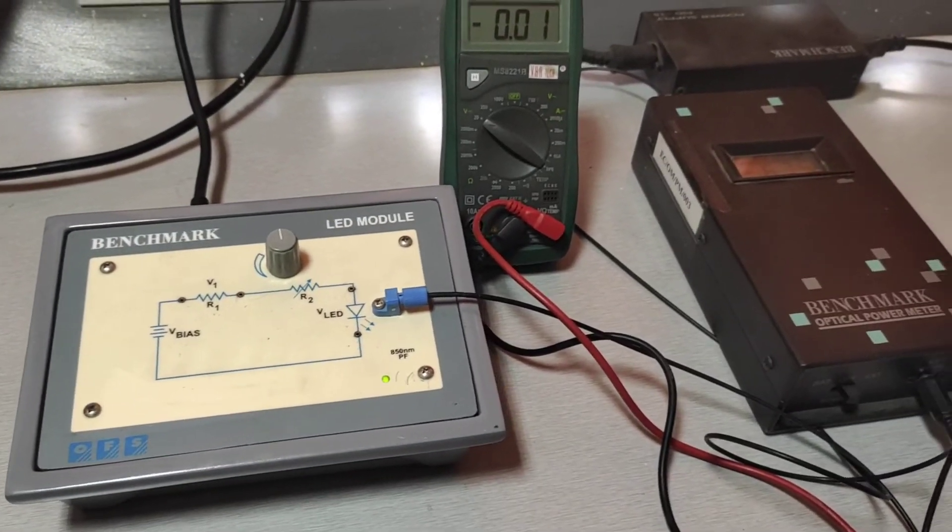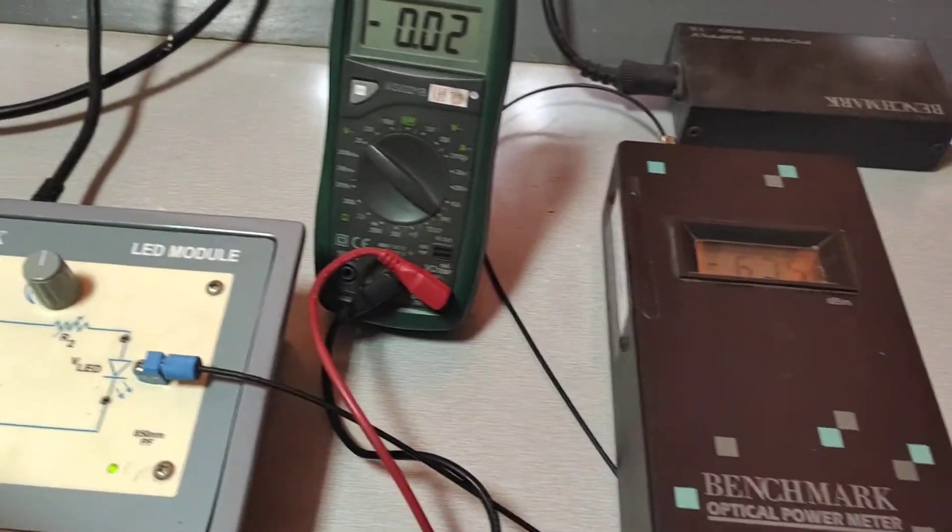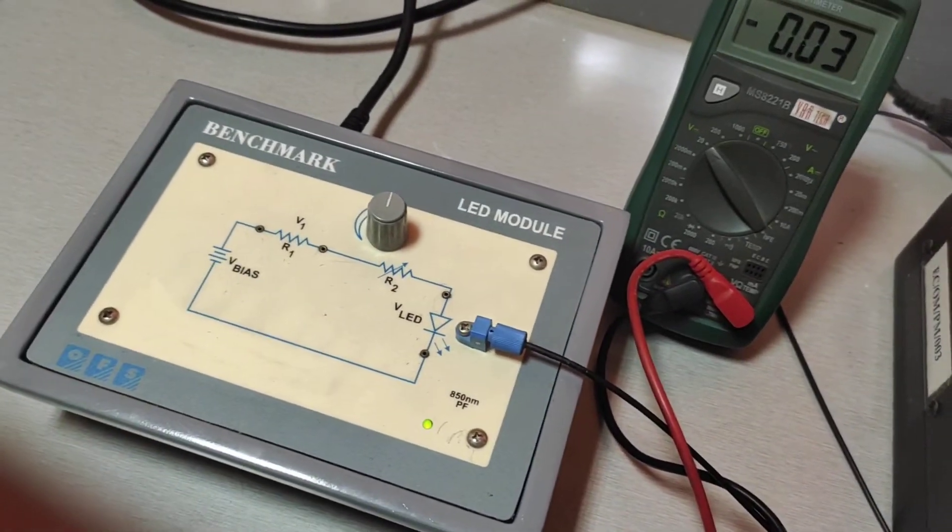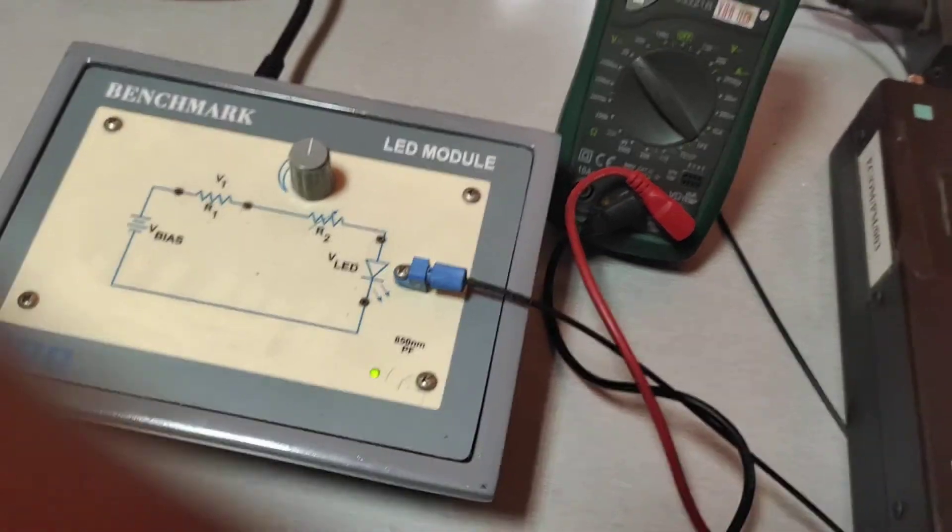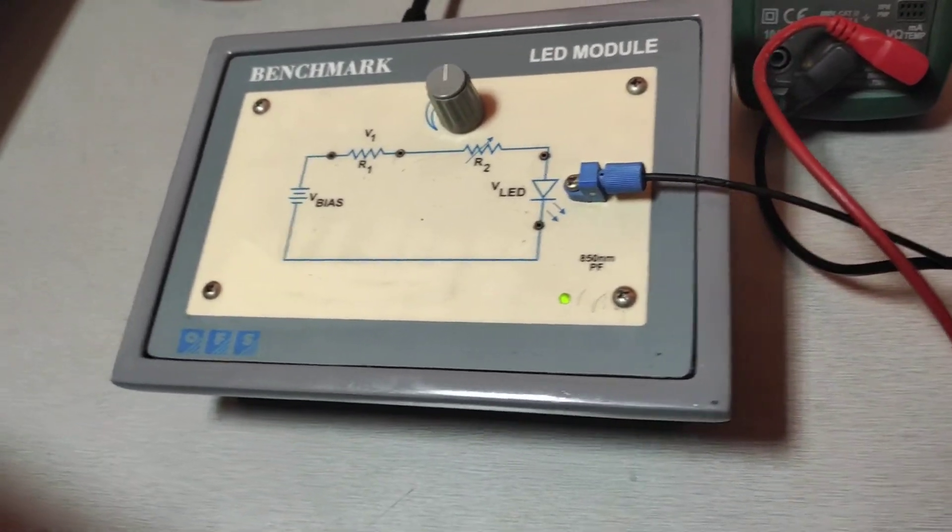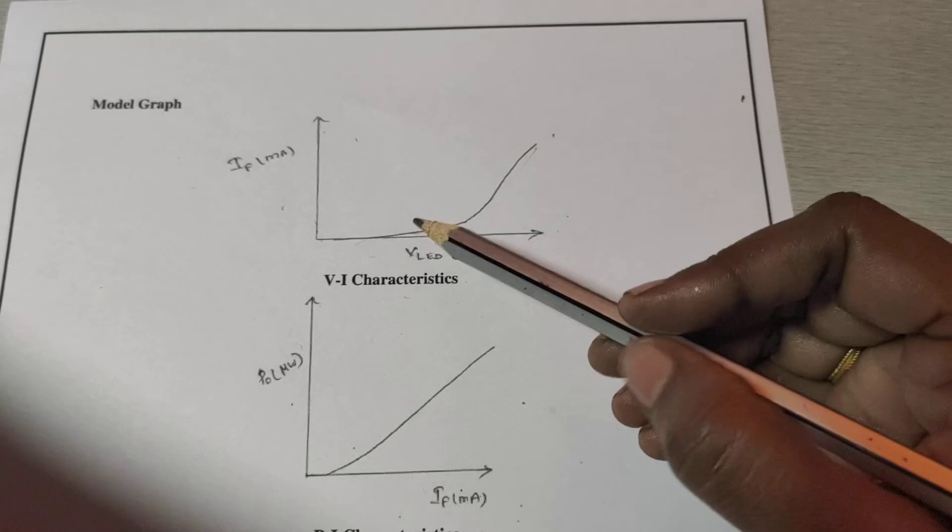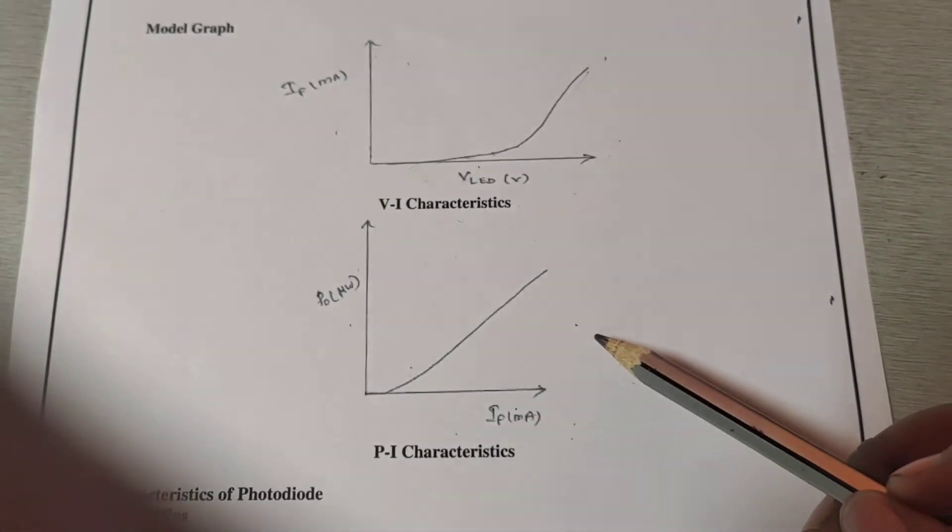After taking the observations, we plot the graphs. We plot the graph for voltage-current V-I characteristics and the power-current P-I characteristics.